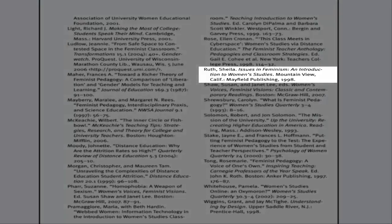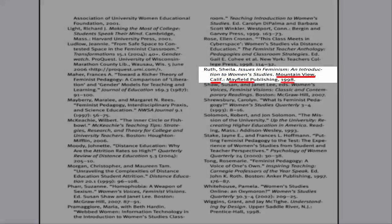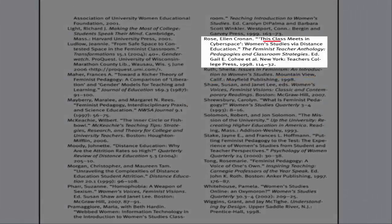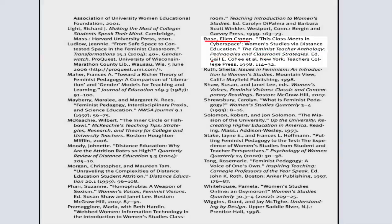Typical clues for a book include the author's name, the book title in italics, the date and place of publication, and a publisher or press. For a book chapter, you'll see the title of the chapter in quotation marks and the title of the book in italics. You'll also see the author's name followed by an editor's name.